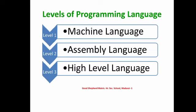We already know that there are two different kinds of computer programming languages: low-level language and high-level language. Low-level language can be further categorized into machine language and assembly language. So the broad classification subdivides into machine language and assembly language, both of which come under the category of low-level language.